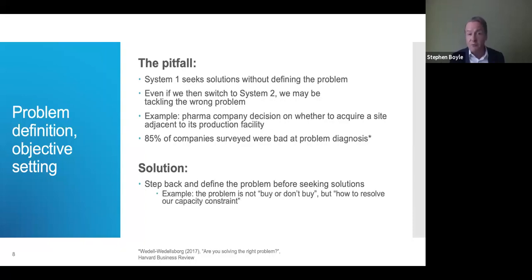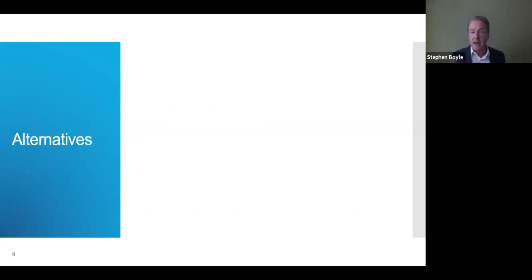In the example of the pharmaceutical company, the problem was never buy or don't buy. The problem was how to resolve your capacity constraint. Then identify the objectives that are to be met by prospective solutions and you're ready to go forward to the next step, which is generating alternatives. And at this step we'll see just why it's so important to ensure that you've engaged in adequate problem definition.